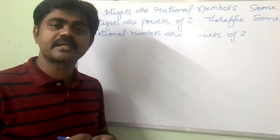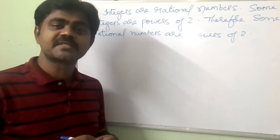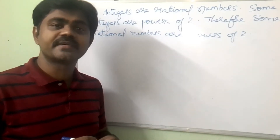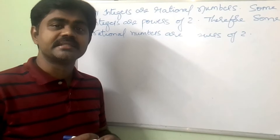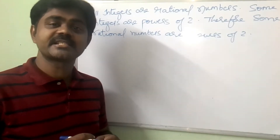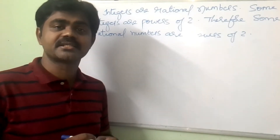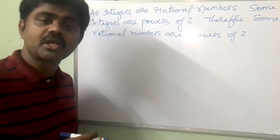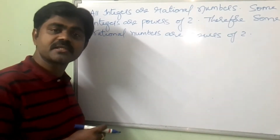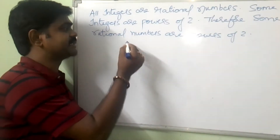Yesterday we discussed four rules: universal specification, universal generalization, existential specification, and existential generalization. In order to solve this, first we elaborate this.